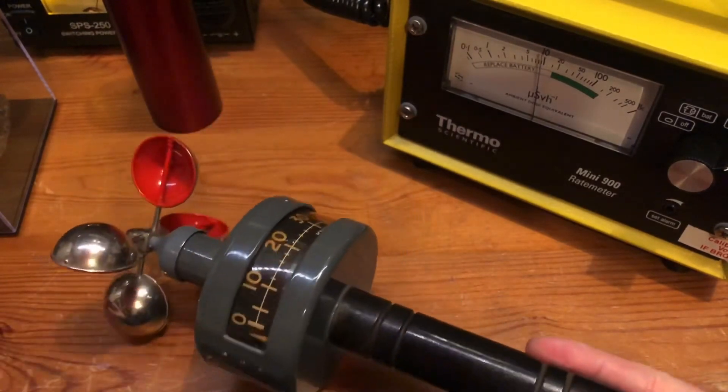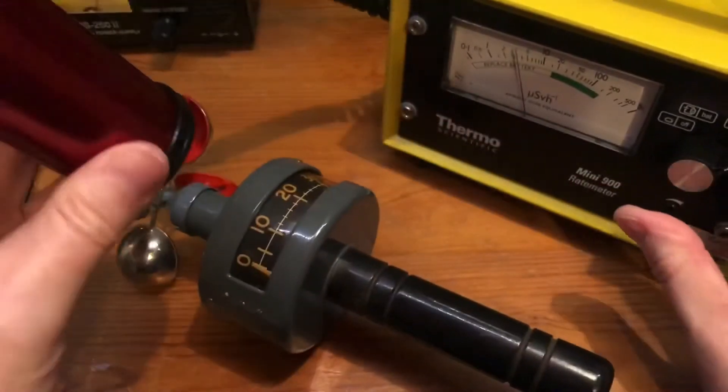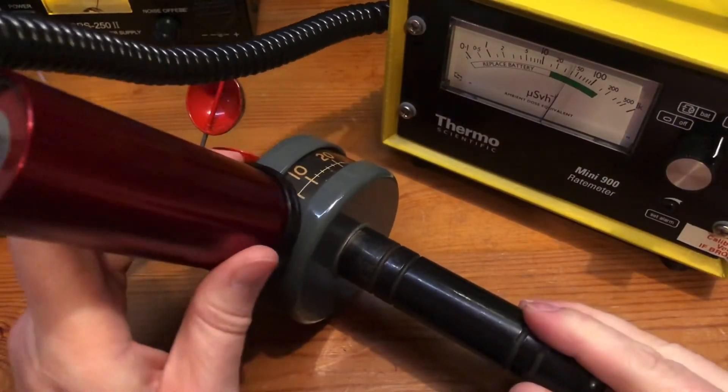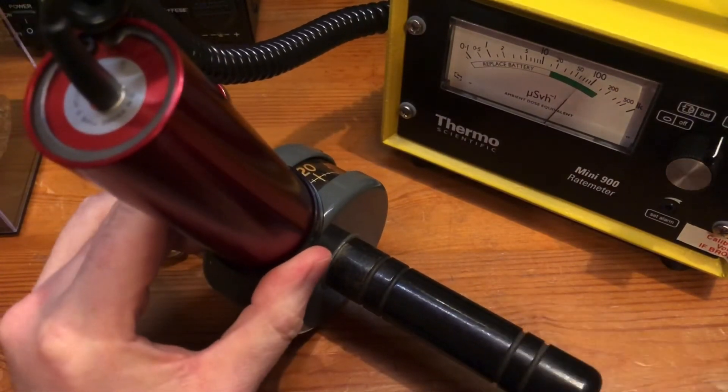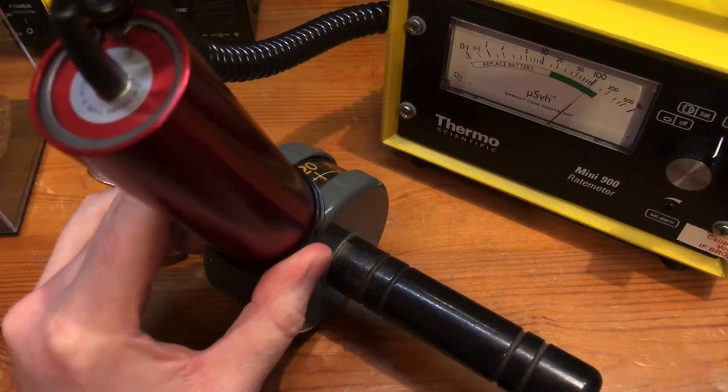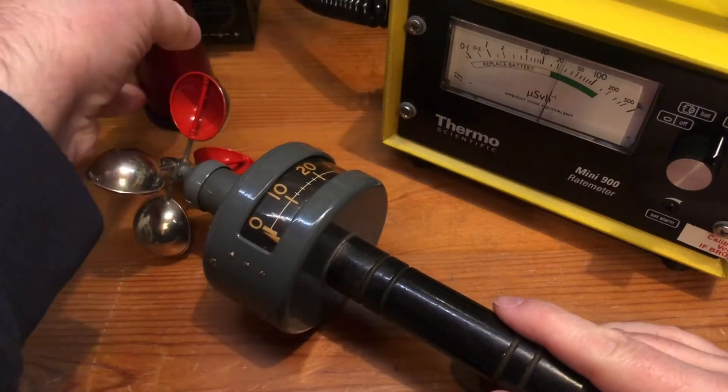In fact, I'll show you the gamma just for interest. As you can see, the gamma is only 100 microsieverts. So that's a very strong hard and soft beta emitter.